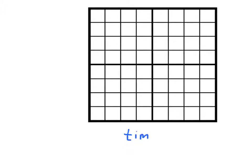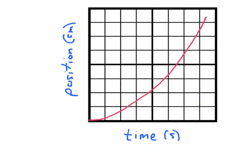In the lab we did in class, we had go-cars rolling down a ramp, and we took in data and plotted a graph where time was on the x-axis, measured in seconds, and we had position on the vertical axis, measured in centimeters. As you guys plotted your data, you ended up seeing a curve to the data that was an up curve like that.